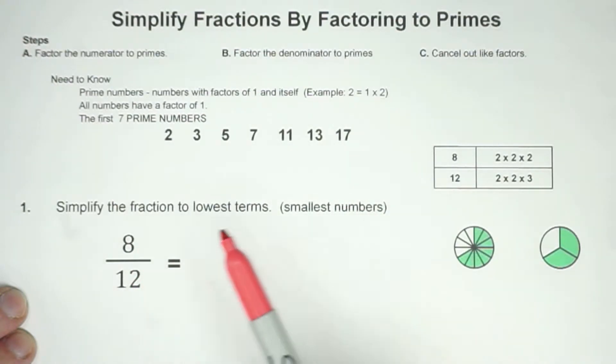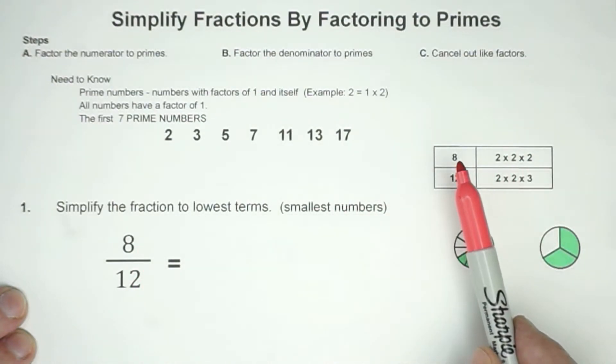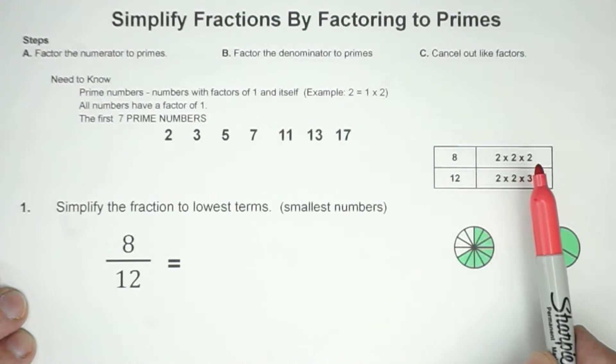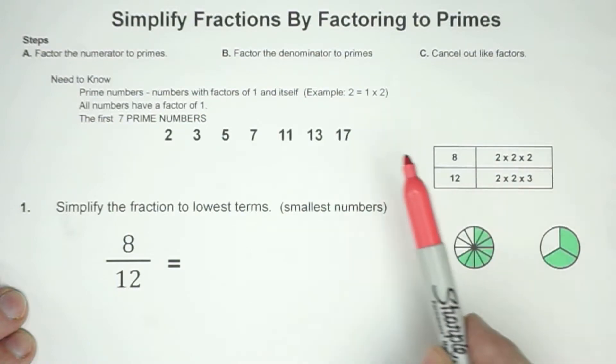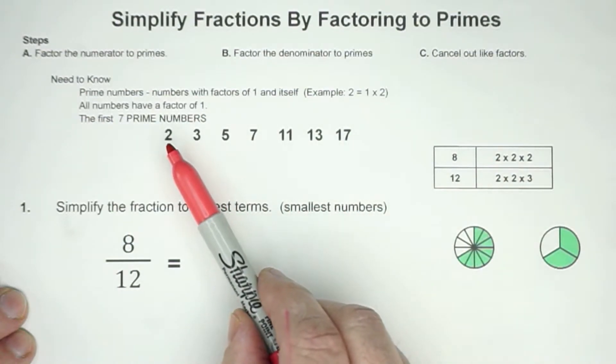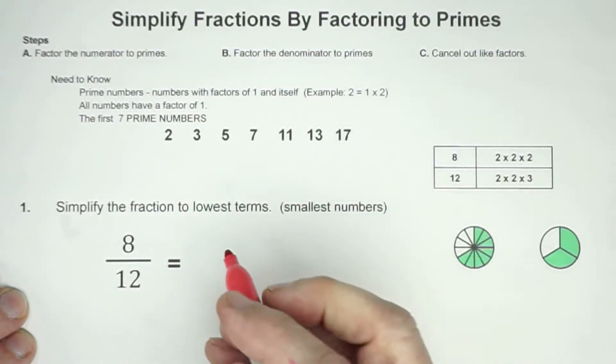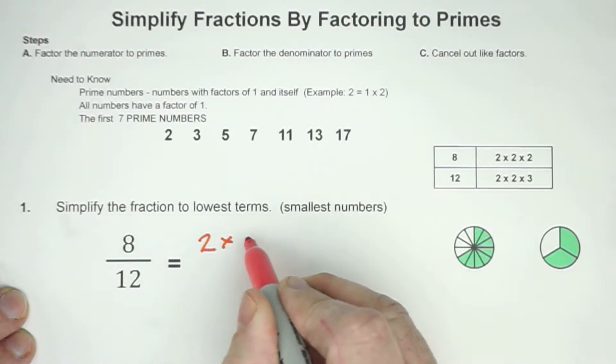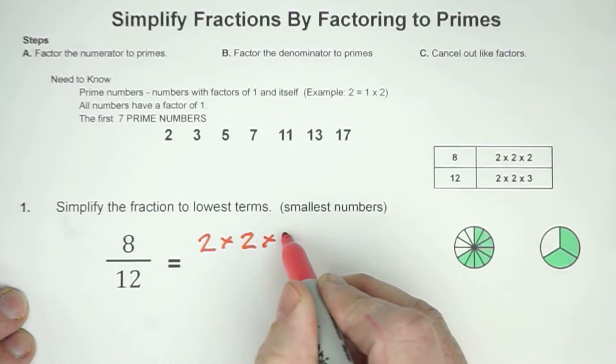So the 8, I wrote the factors over here. Your prime factors of 8 are 2 times 2 times 2. Do you notice that all these 2's, do you see how they're prime numbers? So 8 would prime factor out to 2 times 2 times 2.